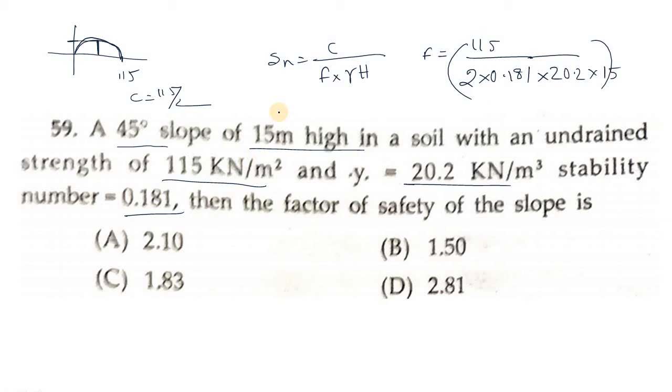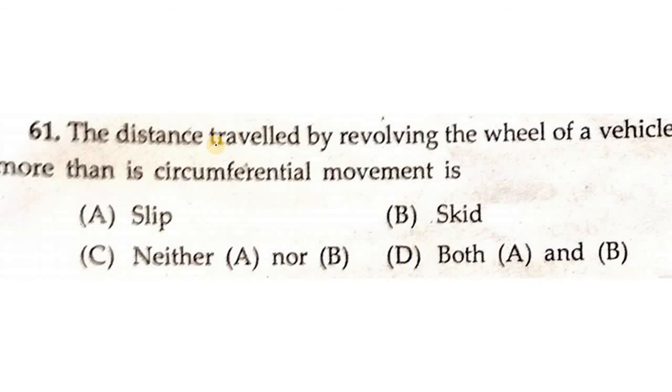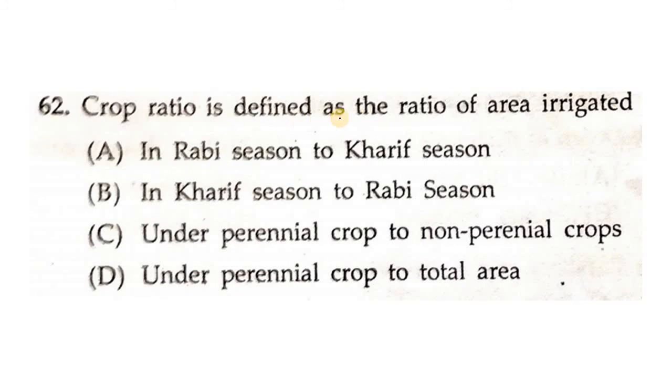In the limit state method, the maximum strain in concrete in bending compression is taken as 0.0035. This is a misprint. This should be 0.0035, so D is correct. The distance traveled by the revolving wheel of a vehicle more than its circumferential movement is known as slip. Crop ratio is defined as the ratio of rabi season to kharif season. Very easy one.